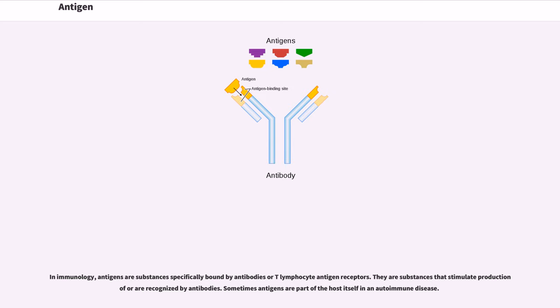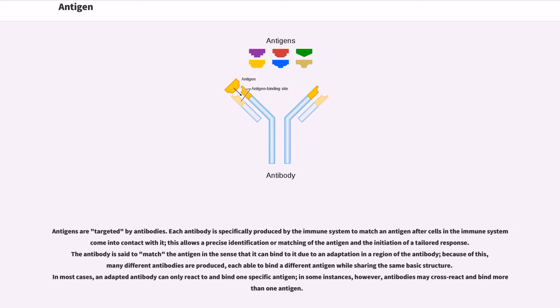Sometimes antigens are part of the host itself in an autoimmune disease. Antigens are targeted by antibodies. Each antibody is specifically produced by the immune system to match an antigen after cells in the immune system come into contact with it.